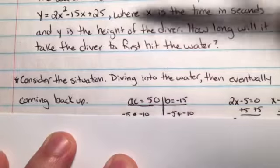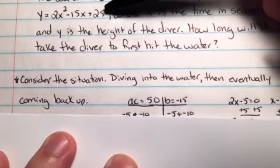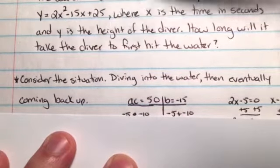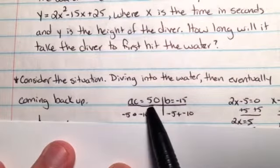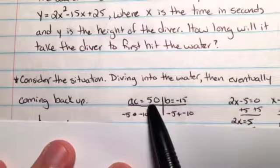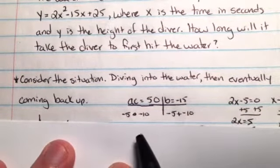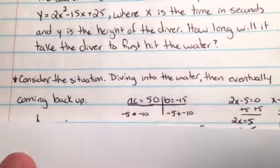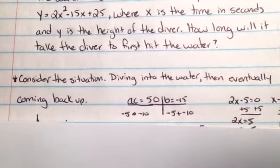Now let's go ahead and factor it. Here's our function. A times c, 2 times 25, that gives us 50. We need that to add up to negative 15. So factors of 50 that would also add to negative 15, they would be negative 5 and negative 10.